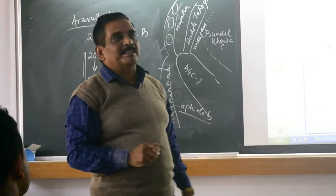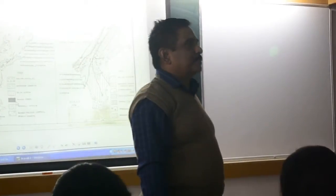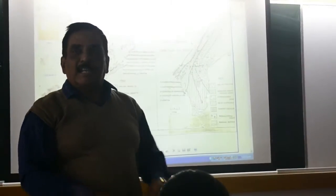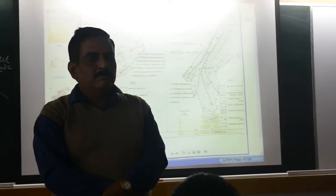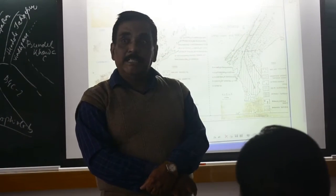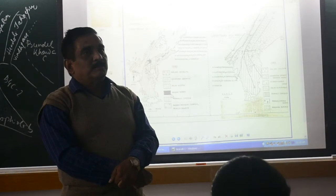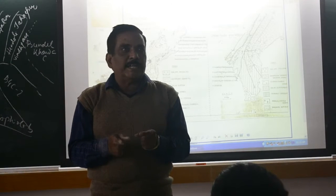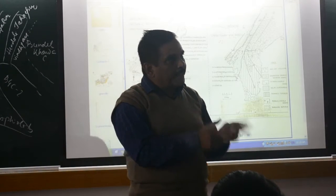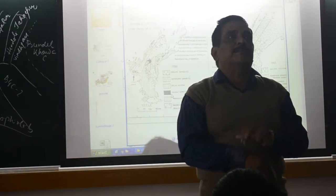There is one more important event that takes place — that is granite. What will you see in the field? How many granites do you see? Granites from the Aurogenic period. When it is Aurogenic, the greatest and strongest implication of Aurogenic is the granite replacement.